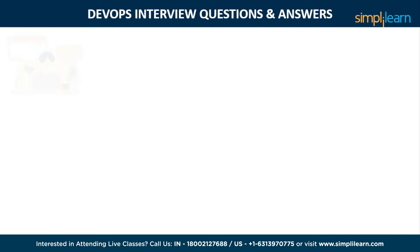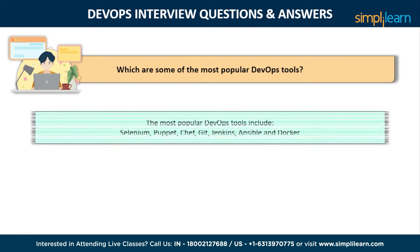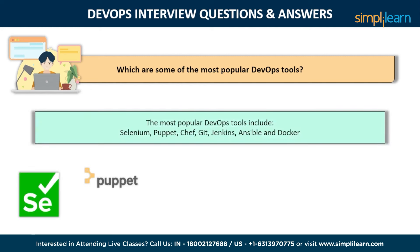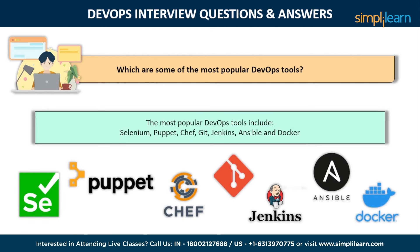The second question is: which are some of the most popular DevOps tools? Some of the most popular DevOps tools include Selenium, Puppet, Chef, Git, Jenkins, Ansible, and Docker, which are considered really important in today's world if you want to become a successful DevOps engineer.